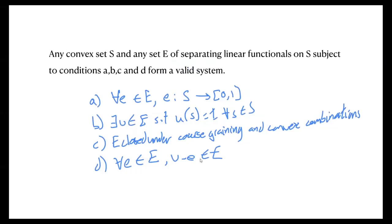So how can we generate all possible GPTs? In the case of single systems, if one takes any convex set S and any set E of separating linear functionals on S — subject to some conditions — then taking S and E together gives a GPT system.